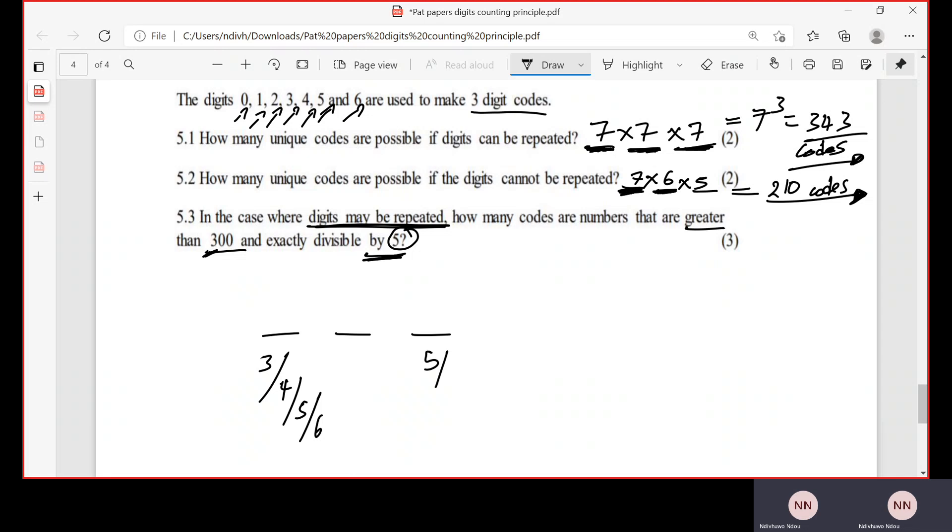it must end with 5 or 0. That's it. It must end with 5 or 0 for it to be divisible by 5. So let's see how many choices do we have here: 1, 2, 3, 4 choices. So in the first position we have 4 choices. In the last position it must be 5 or 0—we have 2 choices. Remember, repetition of digits is allowed, so in the middle,